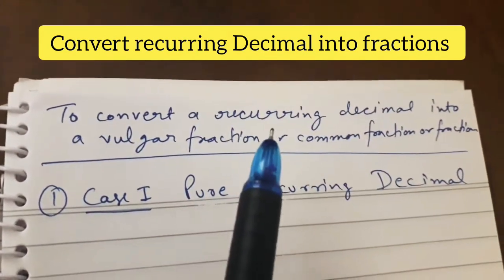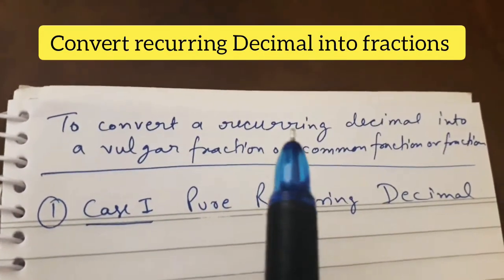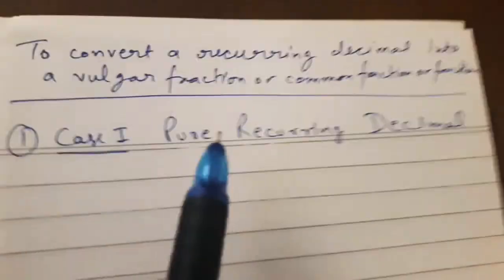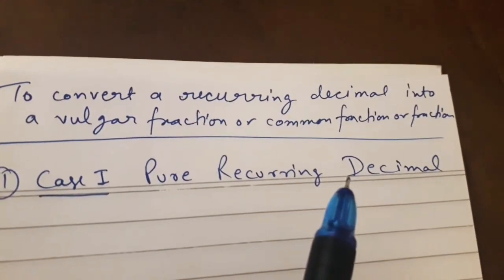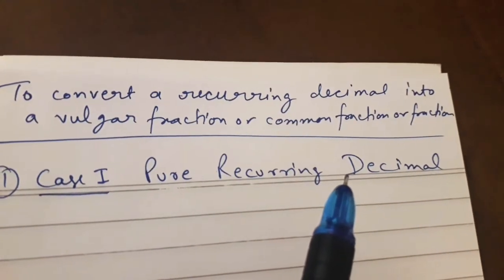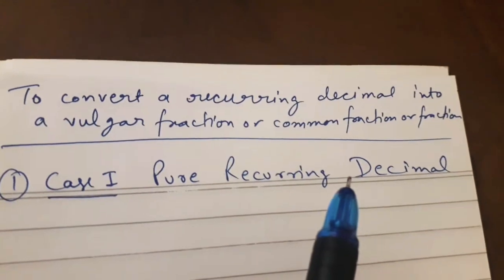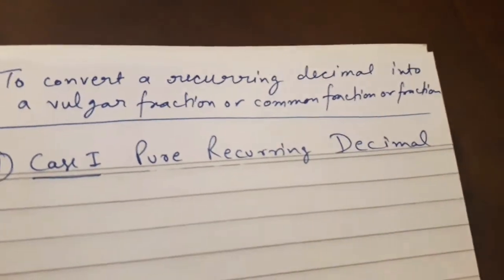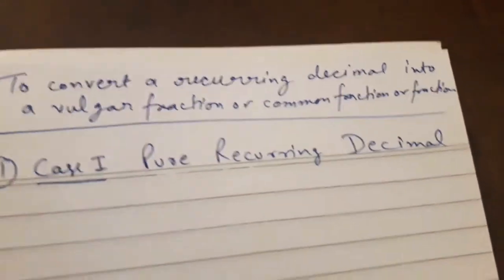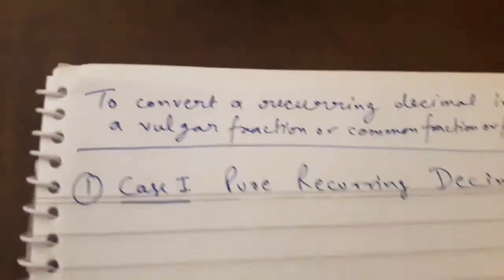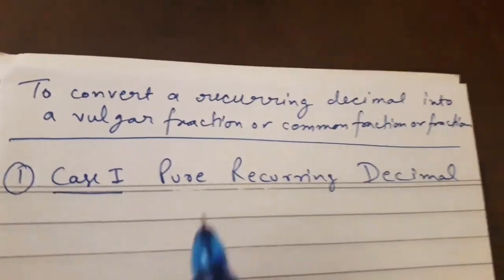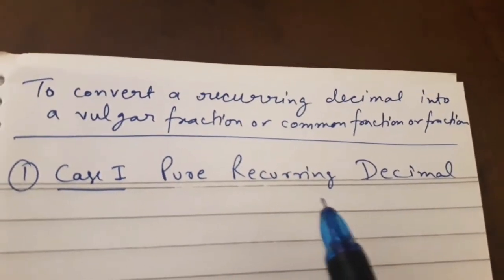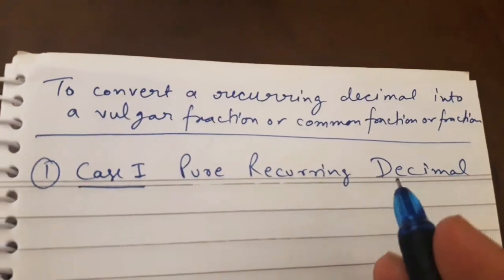How to convert a recurring decimal? There will be two types of cases. The first is pure recurring decimal. What is a pure recurring decimal? The digits after the decimal point are repeated — the same number of digits repeated after the decimal. It is called a pure recurring decimal.